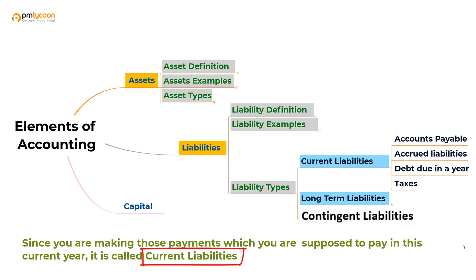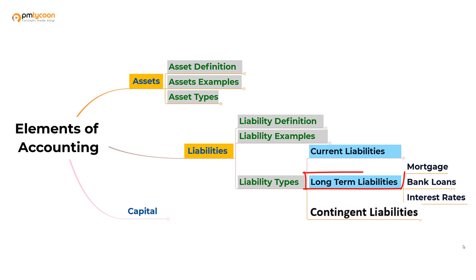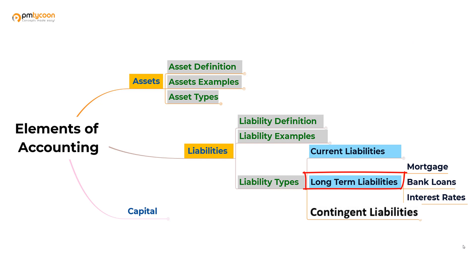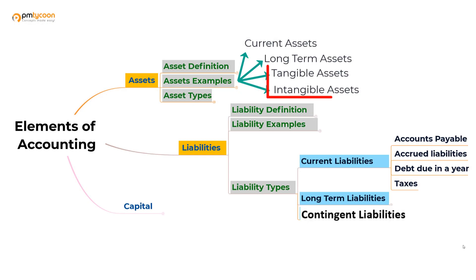Now let's look at long-term liabilities. Simply put, anything that needs to be paid not in the current year is a long-term liability. It could be interest payments on loans, mortgages, cars, or loans taken for machinery, equipment, or land. Anything being paid in the next fiscal year or spread across multiple fiscal years is called a long-term liability.